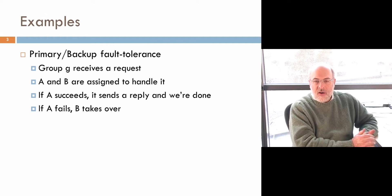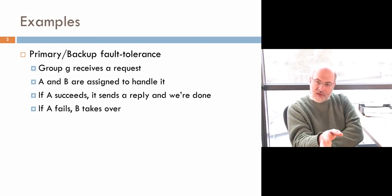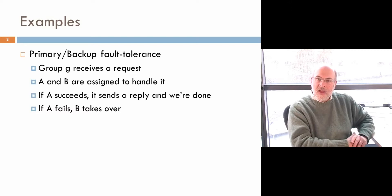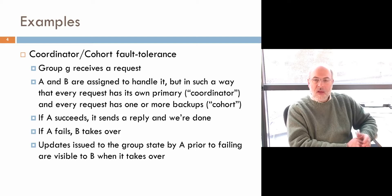A harder problem, which is really not solvable technically speaking with primary backup, is if a request comes in and A is supposed to process it and then respond, and B will take over and process it if A doesn't. What makes this hard is that if A crashes after performing the work but before responding, B might wake up and not know if the work was done or not. One thing to be aware of in a primary backup scheme is that very often when B wakes up, it needs to check some property of the environment to see if A did whatever A was supposed to do.